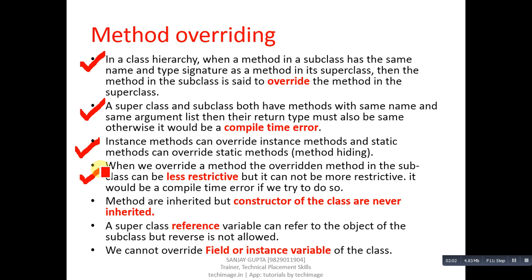This restriction exists because in case of overriding we call methods of the subclass, so it should be less restrictive. The next point says: methods are inherited but constructors of a class are never inherited, so we cannot inherit constructors. The next point says: a superclass reference variable can refer to the object of the subclass, but the reverse is not allowed.